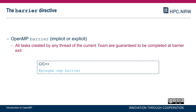In many task-parallel programs, there is only one thread generating tasks while all other threads sooner or later reach a barrier, wait for task generation to happen, and then pick up those tasks for execution. This is popular with recursive algorithms or a single-executor pattern where a single thread iterates a loop and generates tasks.